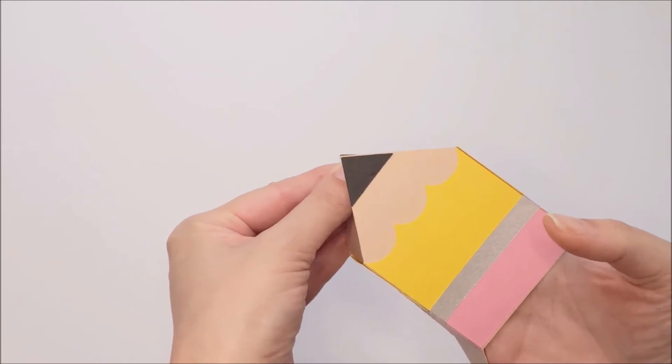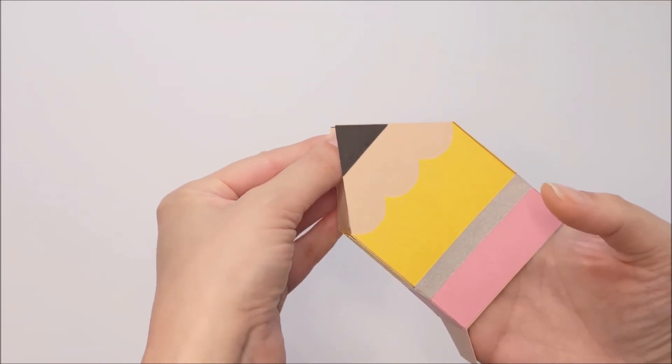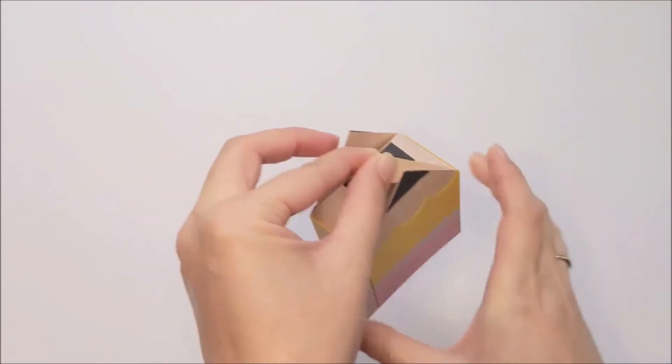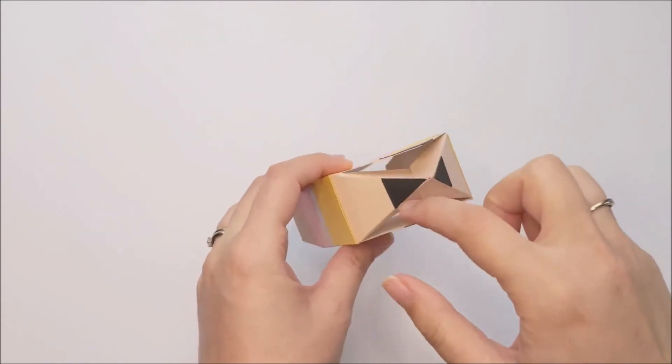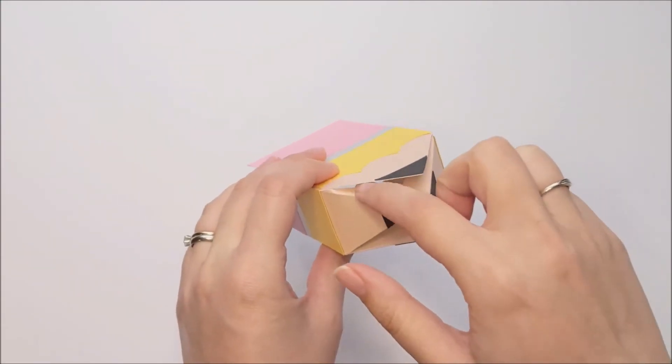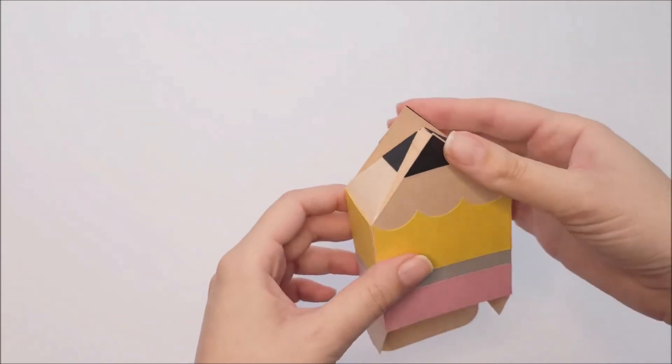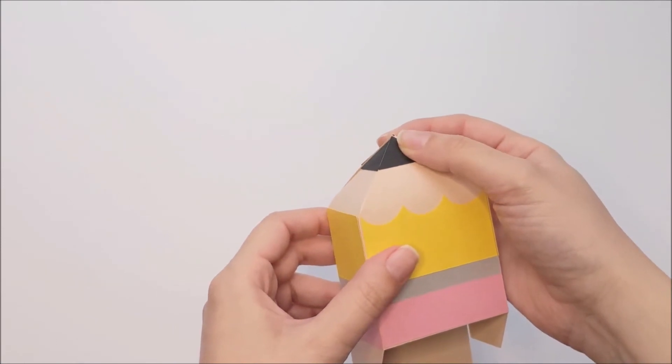So I'm just applying pressure on the inside to make that glue stick that I stuck at the points. Now we're going to apply glue to these flaps here, and then we'll press our front and back to keep those in place.